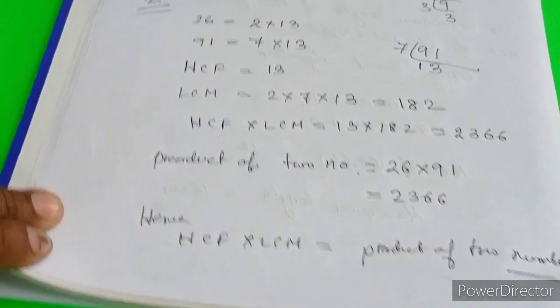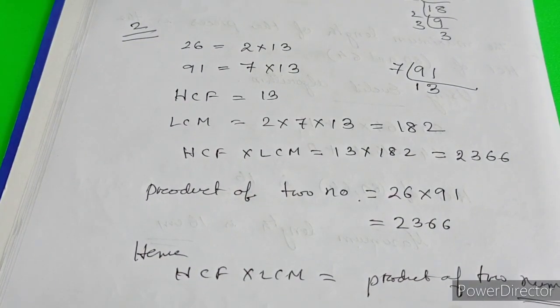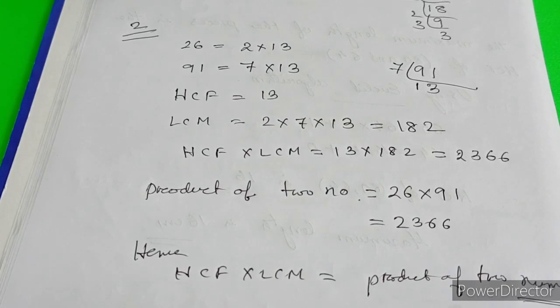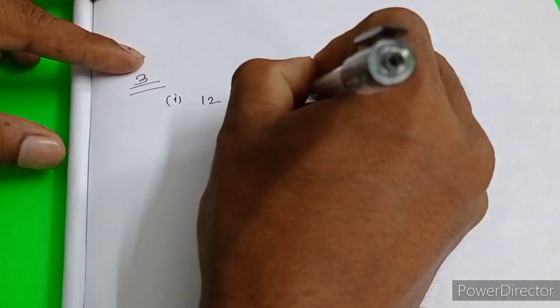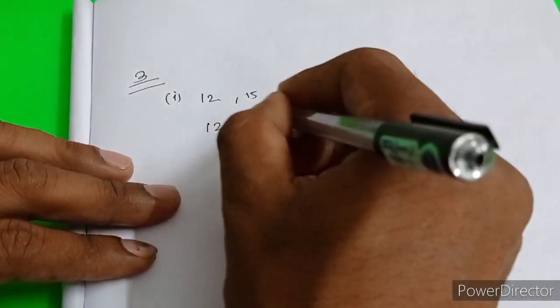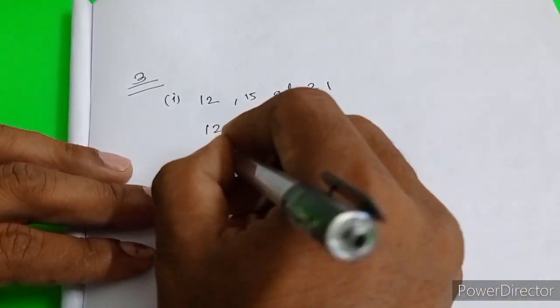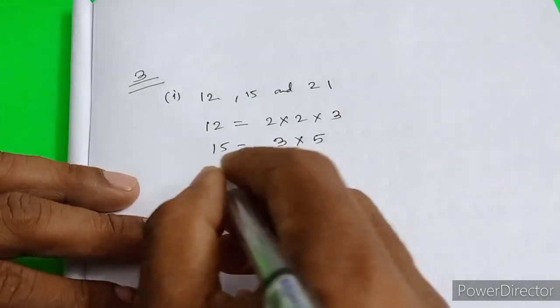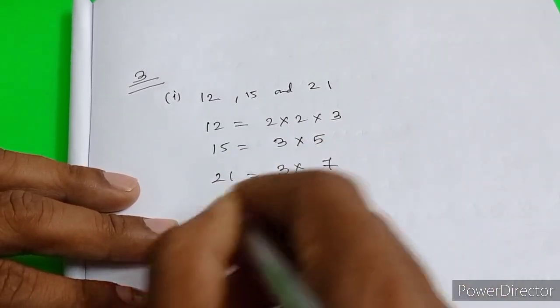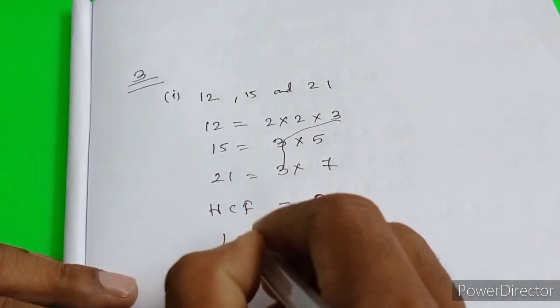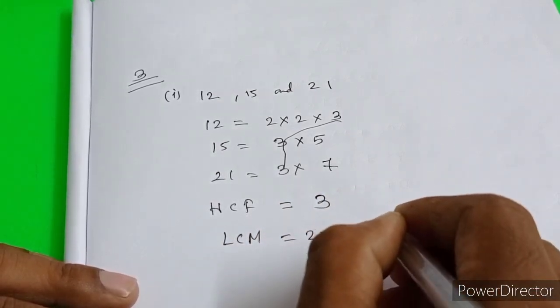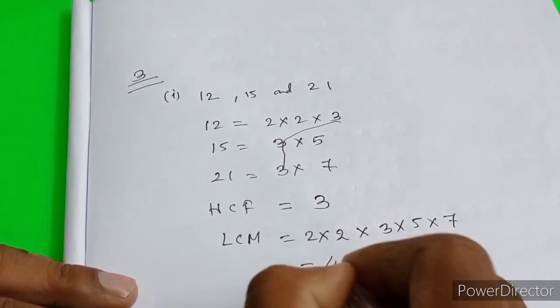Question Number 3: Find the LCM and HCF of the following integers by applying prime factorization. Roman number 1: 12, 15, and 21. 12 is 2 into 2 into 3. 15 is 3 into 5. 21 equals 3 into 7. HCF equals the common factor, 3. LCM equals 2 into 2 into 3 into 5 into 7, this is 420. Clear, this is Question Number 3.